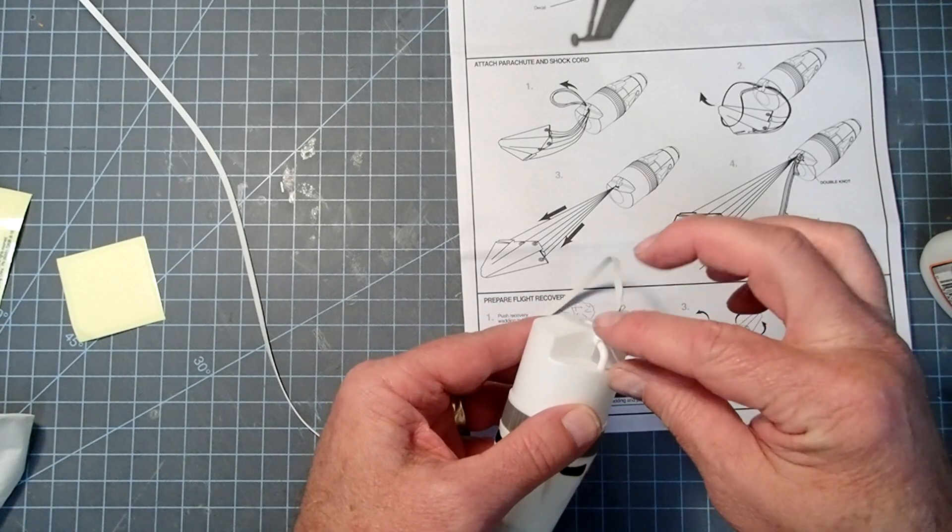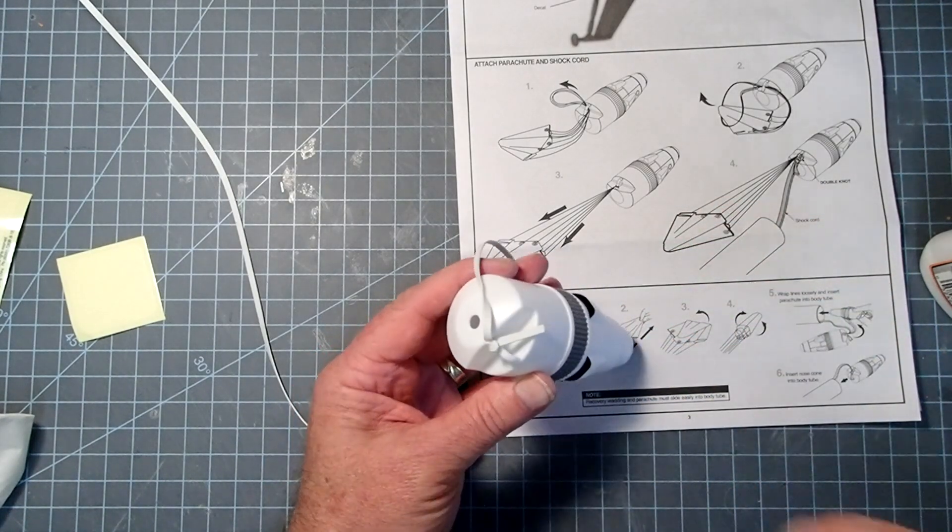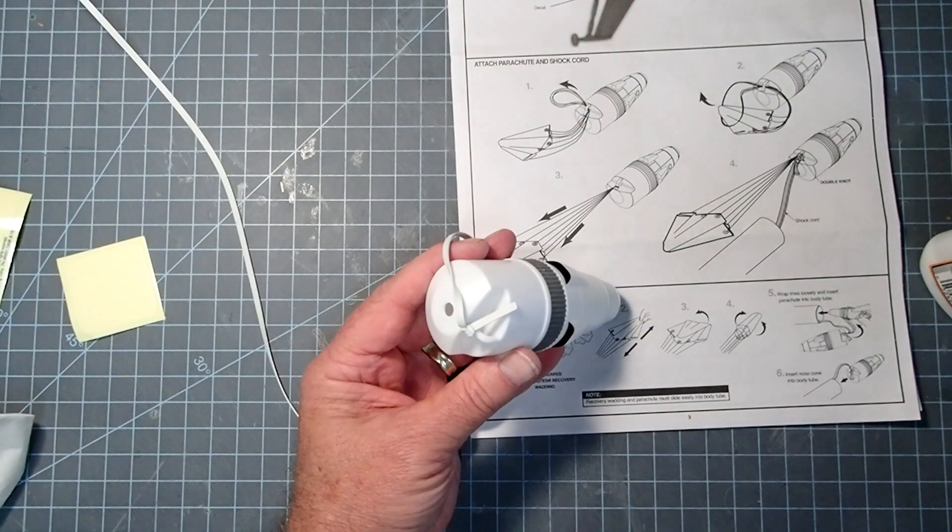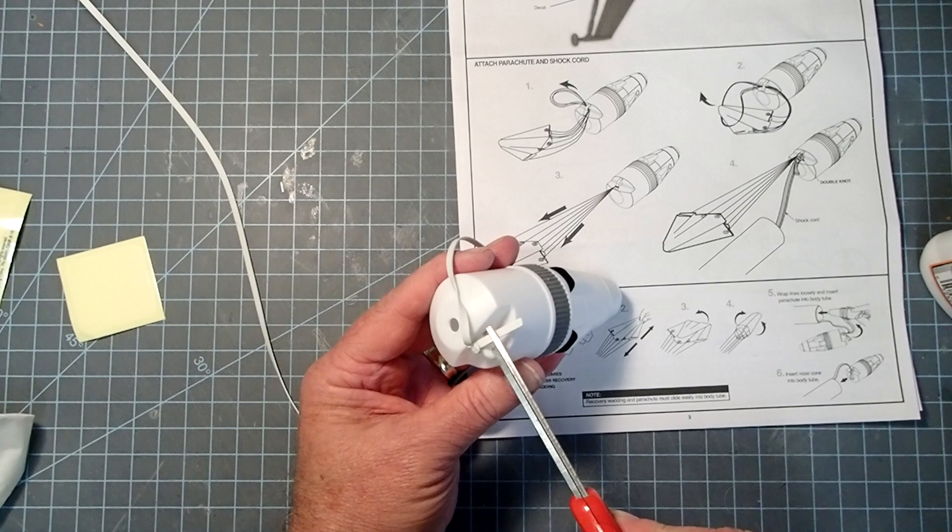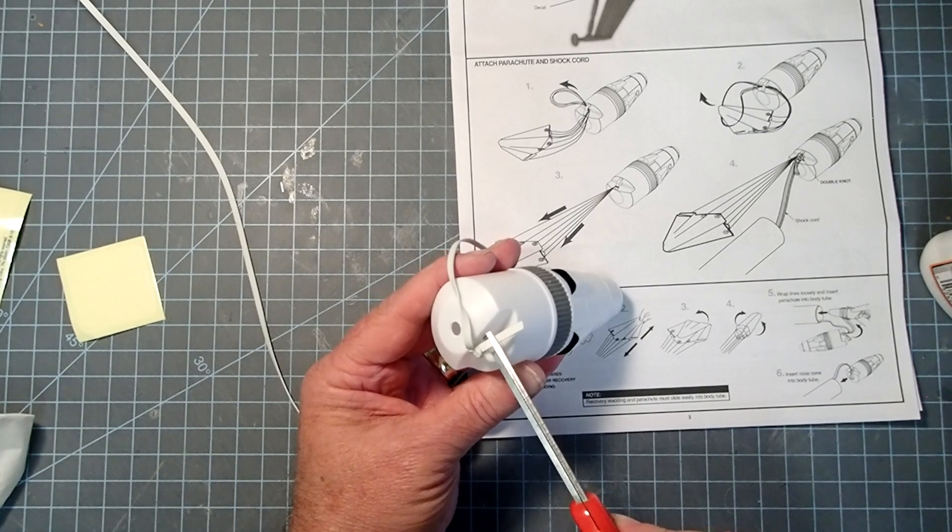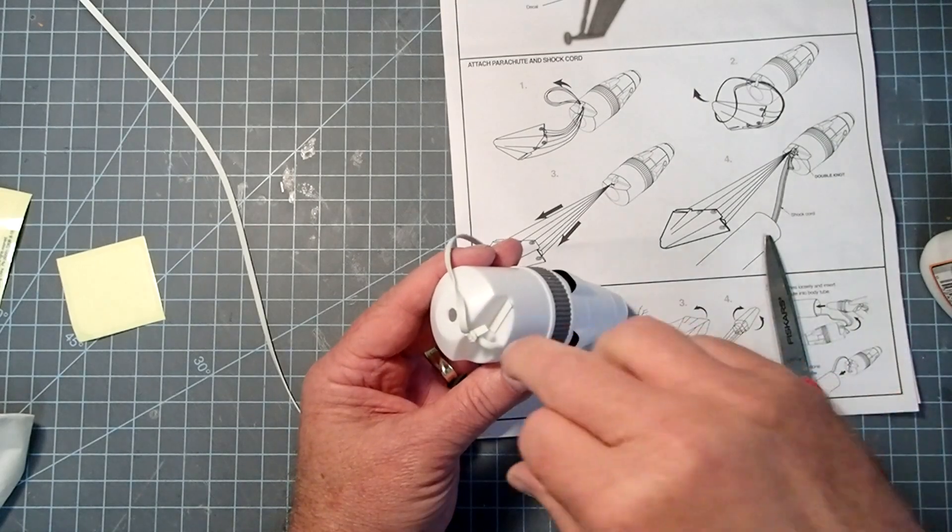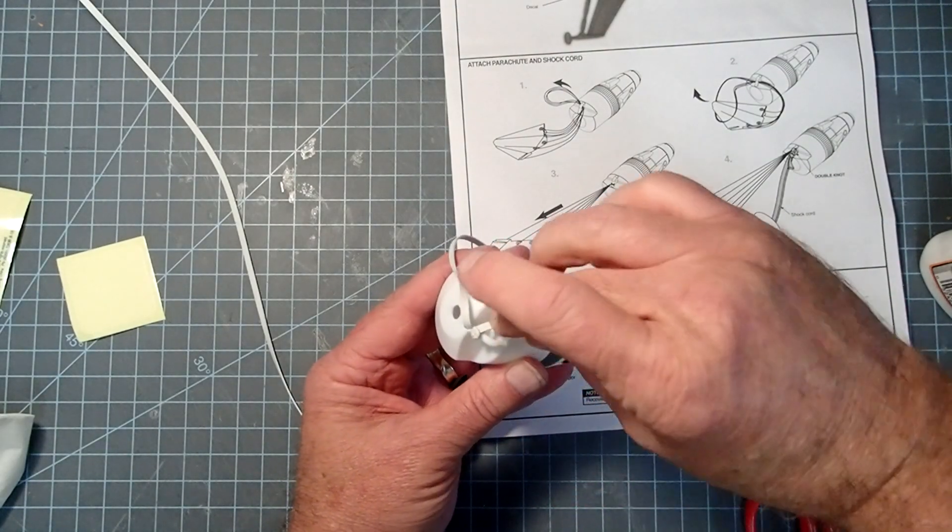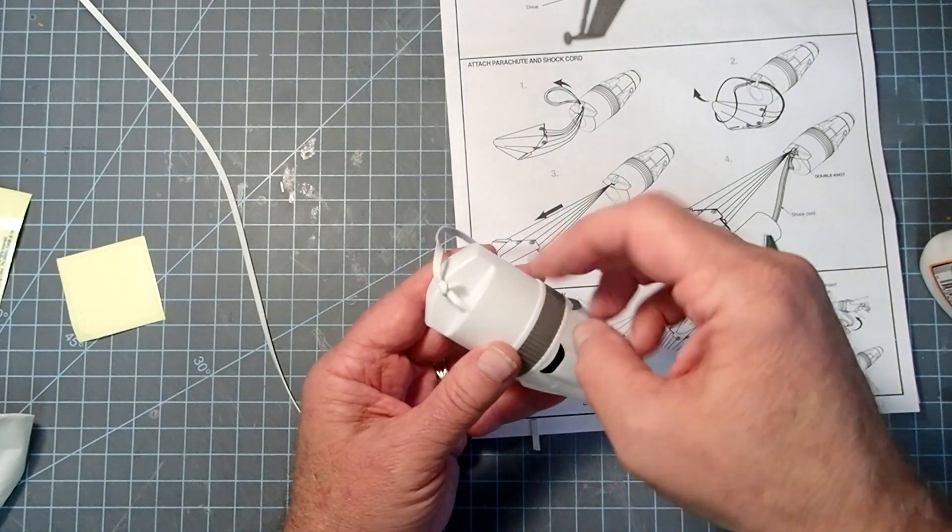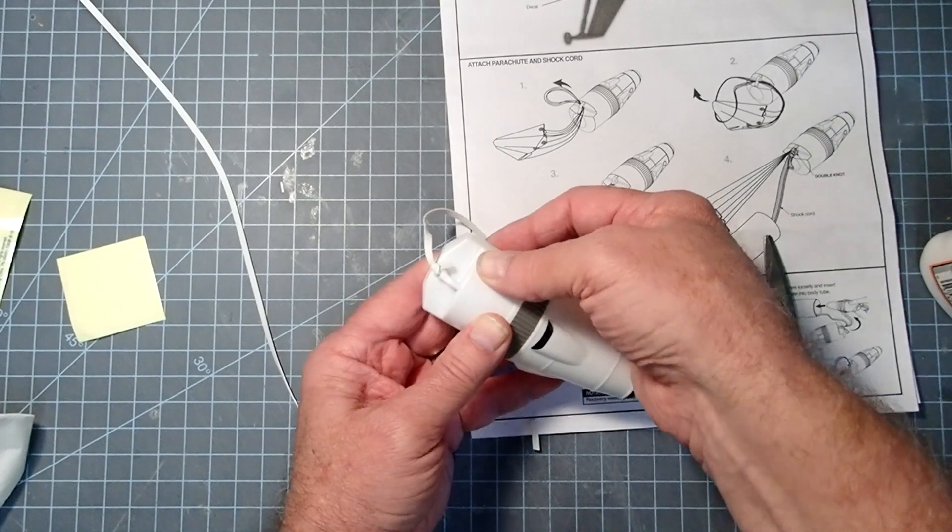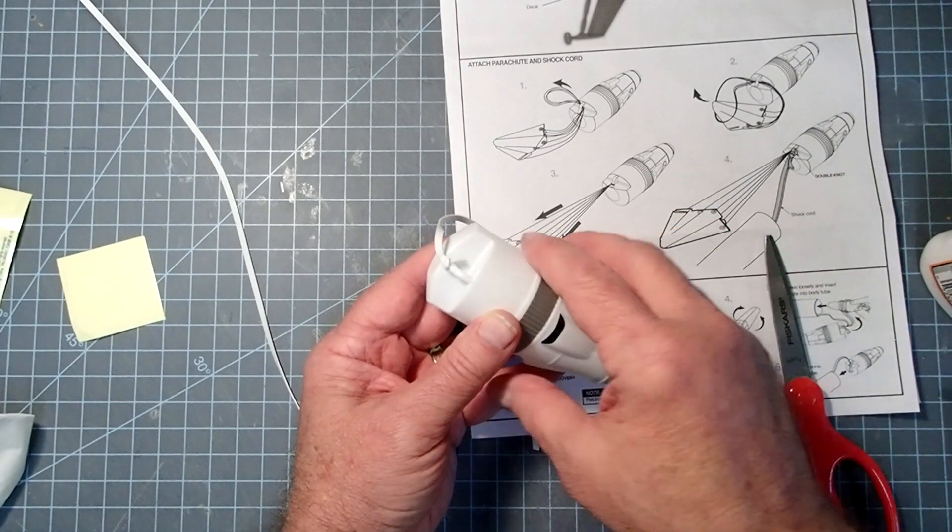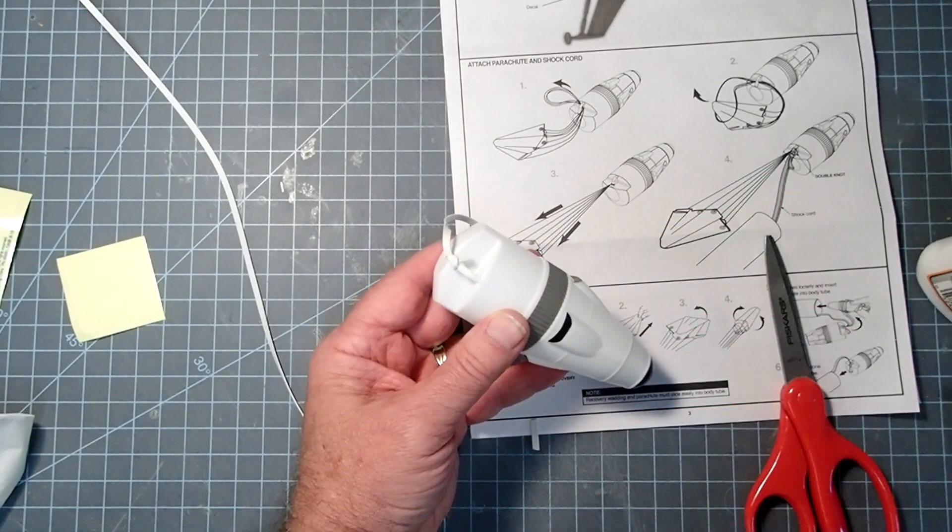Now, on the free end of that, cut that back to about a quarter inch or about six millimeters or so there. You don't want to go all the way to the knot, but you don't want any of this getting up beside the shoulder here where it would be between the shoulder and the body tube. That could prevent it from ejecting properly.